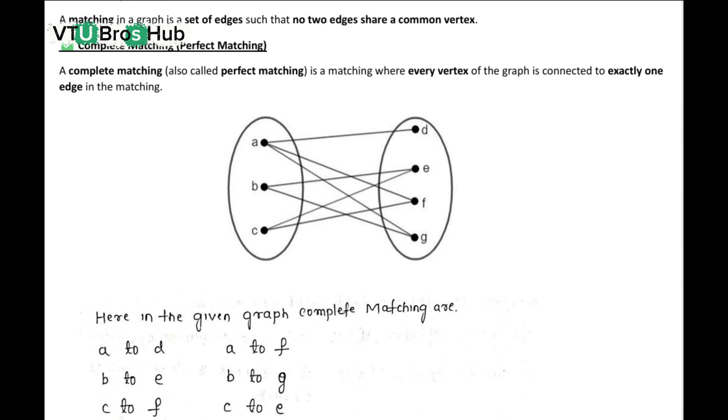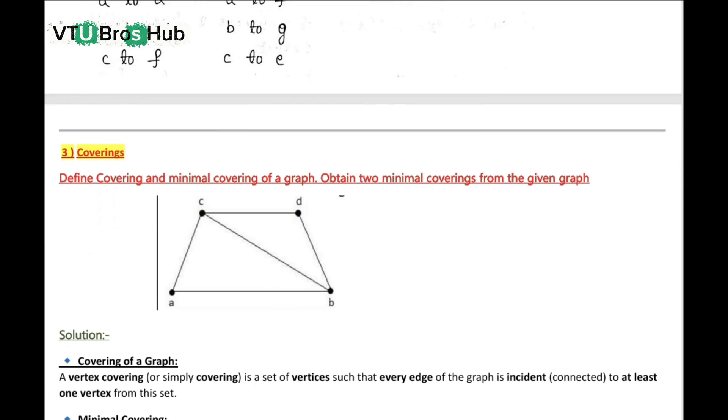What is a complete or perfect matching? It connects every vertex to exactly one edge in the matching. Now look at the PDF image. Two complete matchings are marked in the given graph.